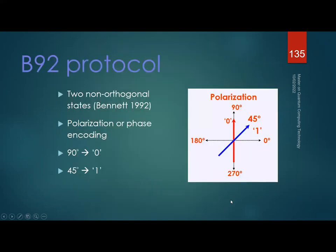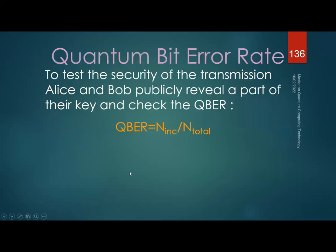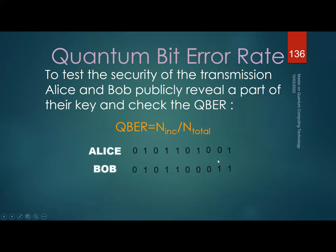There are other protocols too — for example the B92 protocol, which uses only two non-orthogonal polarization states, one encoding each binary value. To test the security of the transmission, Alice and Bob publicly reveal a portion of the key and check the error rate — the number of incorrect bits over the total number of bits.